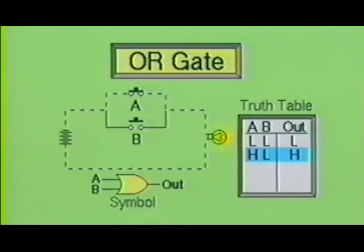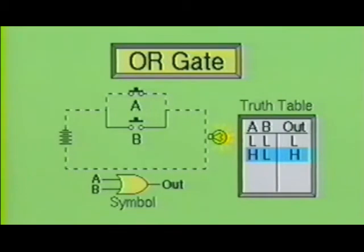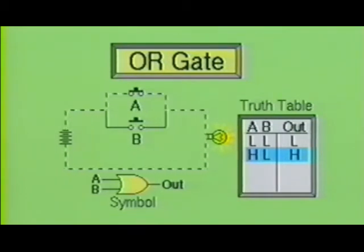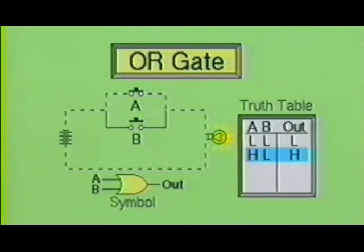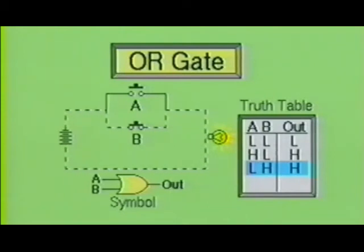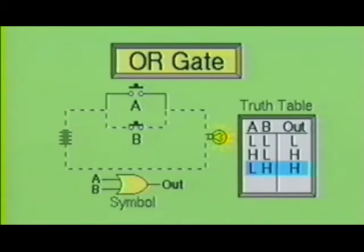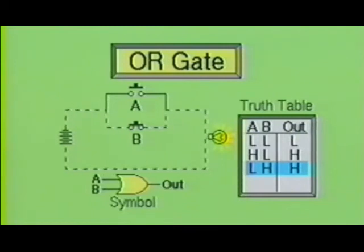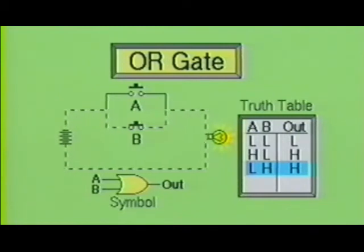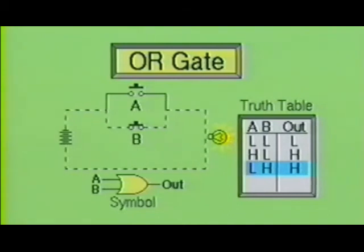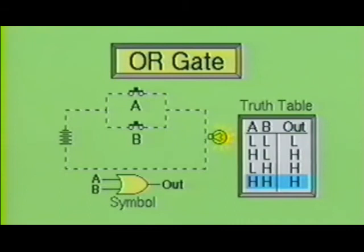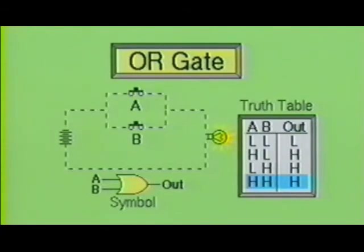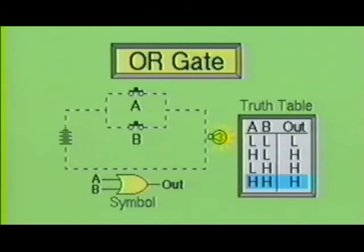Now suppose we push the button down on switch A. The lamp turned on. Our truth table now shows that a high on A and a low on B will produce a high at the output. Next, we will release switch A and push the button on switch B. Once again, the lamp is energized. The truth table now shows that a low on A and a high on B will result in a high at the output. We can produce a high at the output by pushing in the button on either switch A or switch B. Now suppose we push in switch A and switch B — the lamp will turn on, represented on the truth table as a high on A and a high on B, which produces a high at the output.